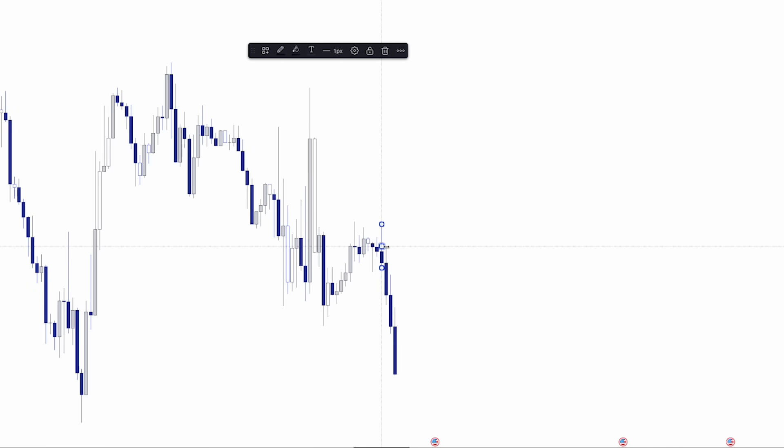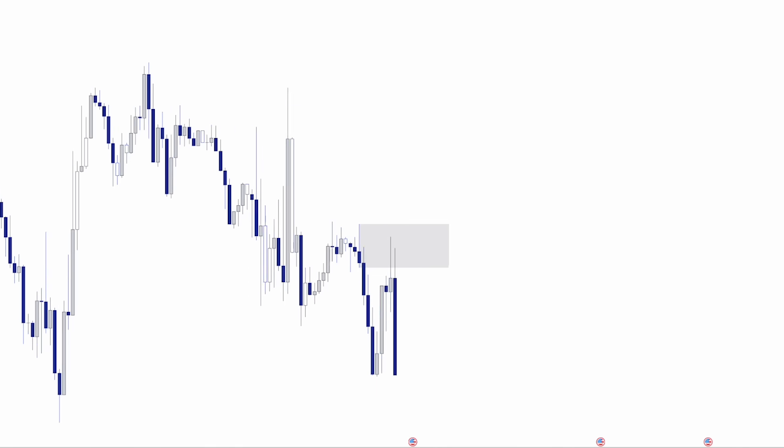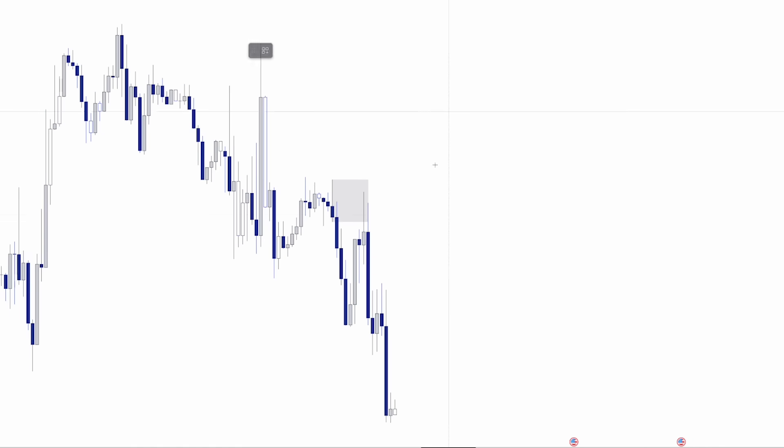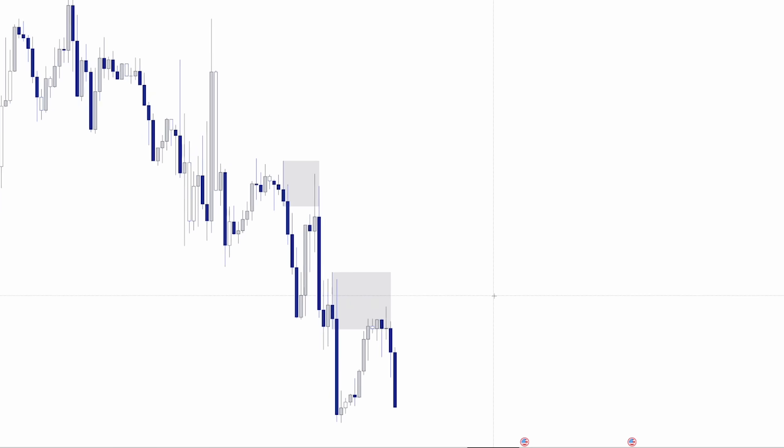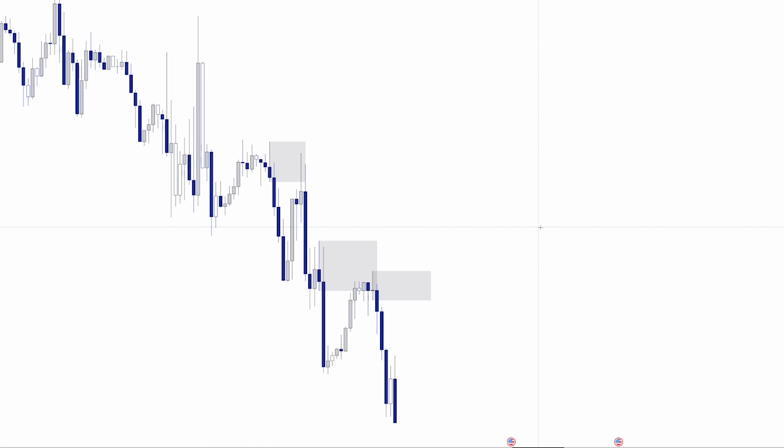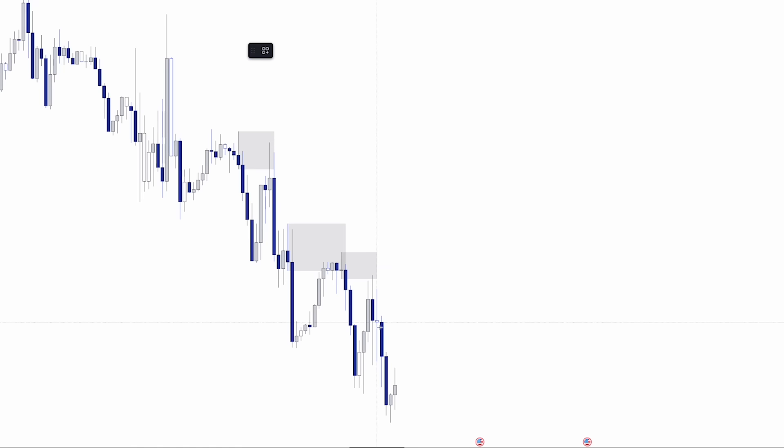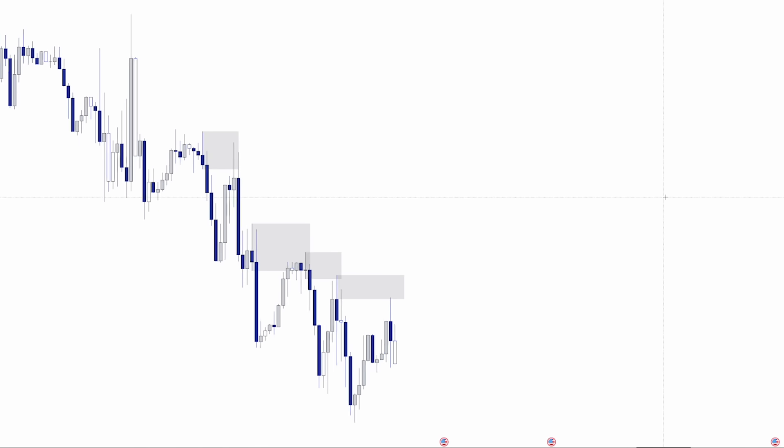So here you can see price rapidly initiates out of the range to the downside, creating a supply zone. It's likely this was backed by institutional involvement. Price then pulls back to mitigate the supply zone where we can look to get short to catch the continuation. You can see the sustained bearish order flow as supply is clearly in control. But markets obviously don't move in one direction forever.